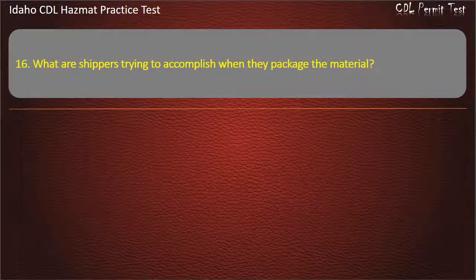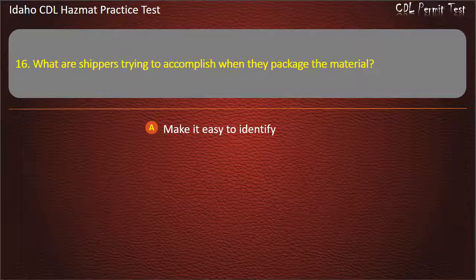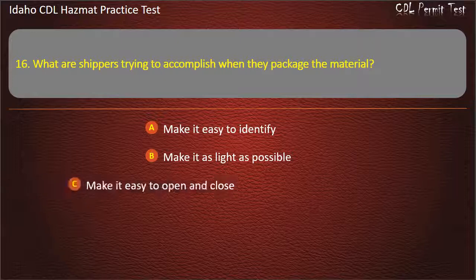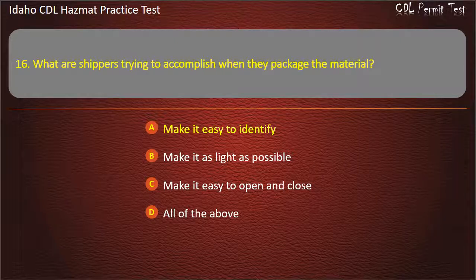Question 16. What are shippers trying to accomplish when they package the material? Make it easy to identify. Make it easy to open and close. All of the above. Answer: Make it easy to identify.